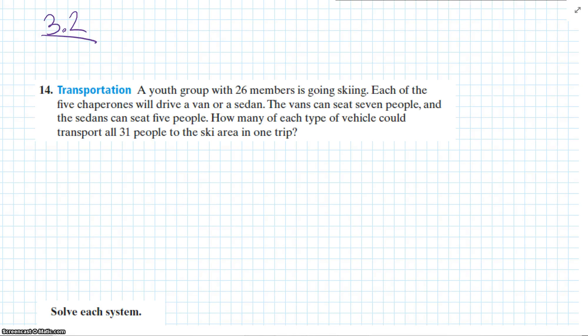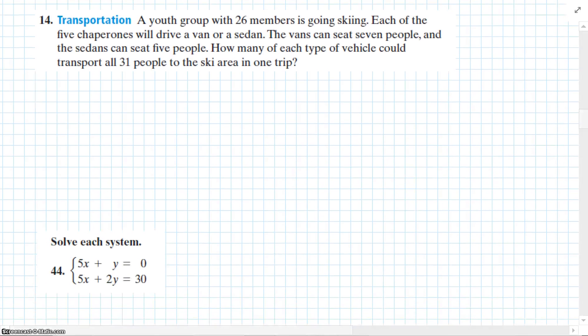Chapter 3, Section 2 Review, question number 14 at the end of the 3.2. A youth group with 26 members is going skiing. Each of the five chaperones will drive a van or a sedan. The vans can seat seven people and the sedans can seat five people. How many of each type of vehicle could transport all 31 people to the ski area in one trip?